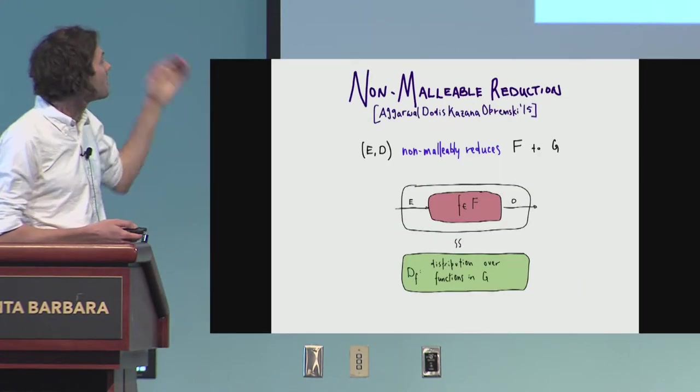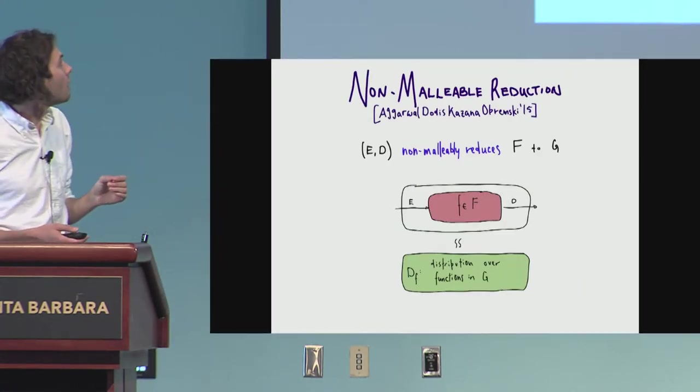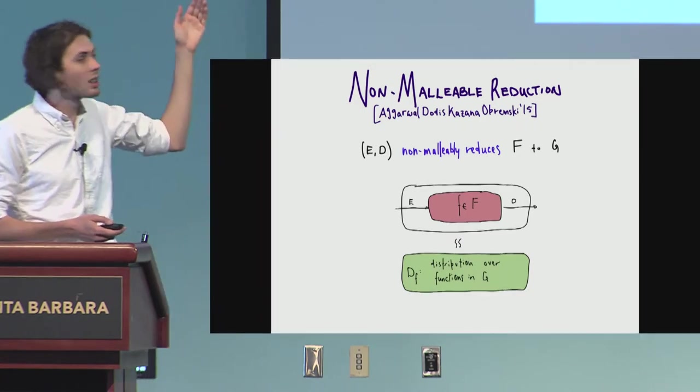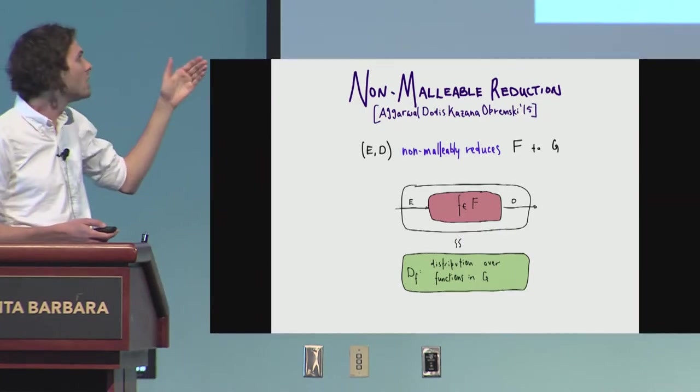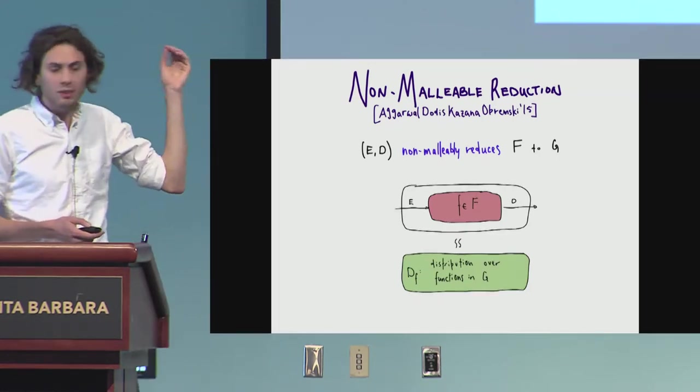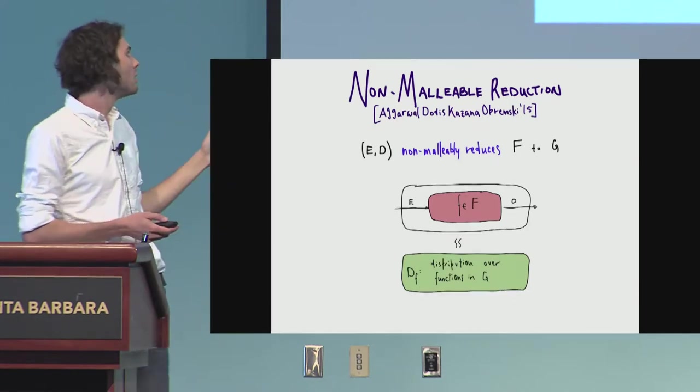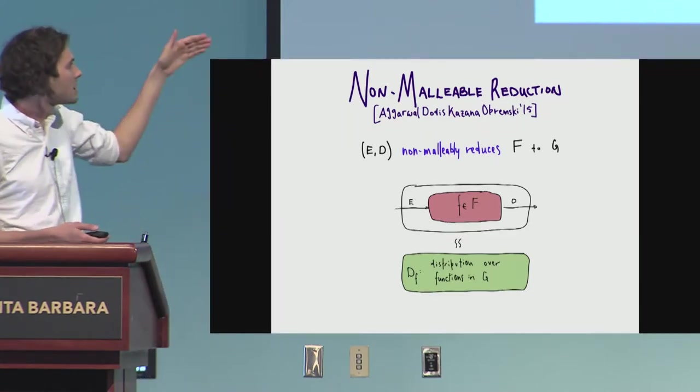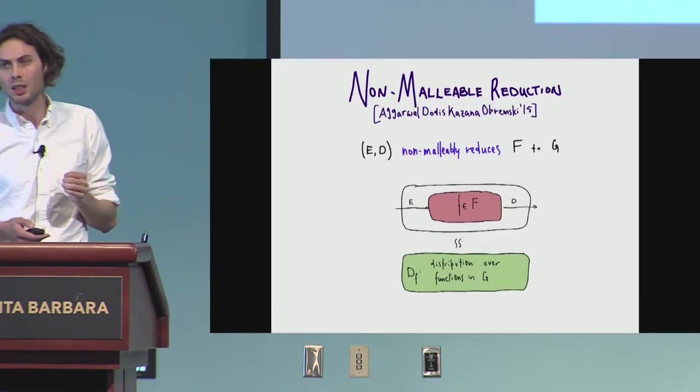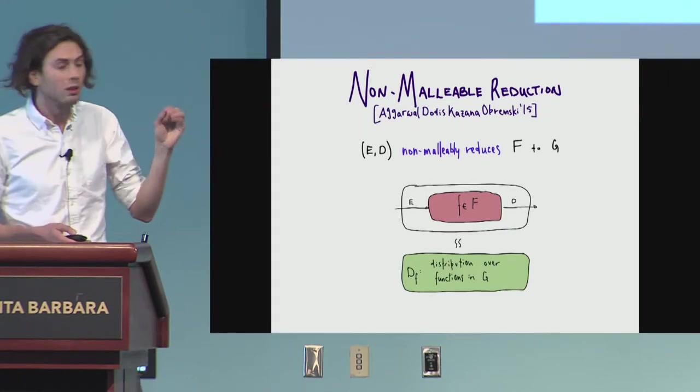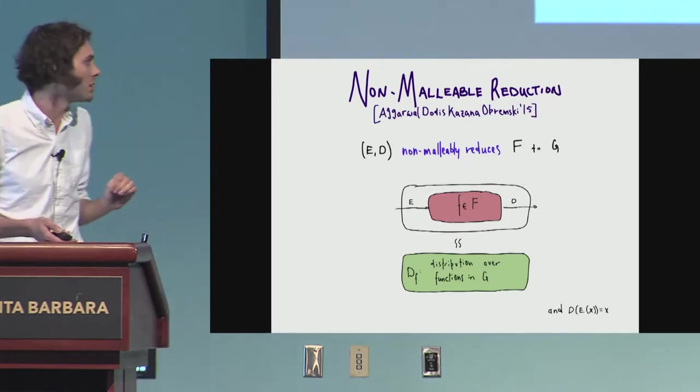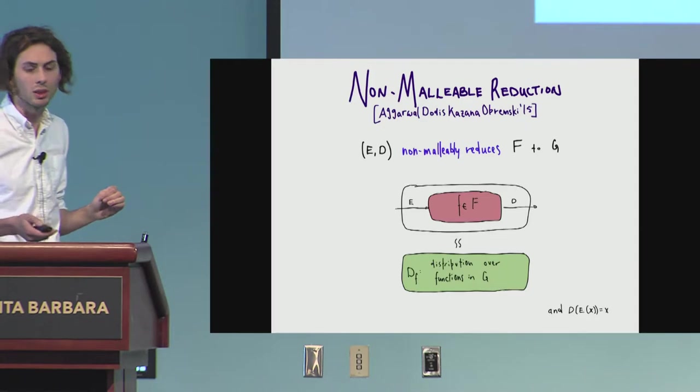A simple channel that we like, that we know how to handle, basically. So the encoding and decoding are the reduction. So formally, E and D non-malleable reduces a tampering class F to G, if E composed with any function F in the class, and then with D, should be statistically close to some distribution over functions in G. G is the nice class here. And you also need this non-triviality requirement as well. You need to preserve that you're actually encoding something.